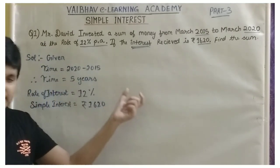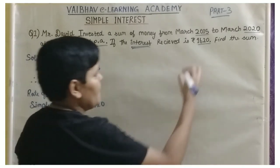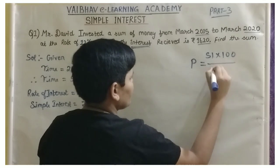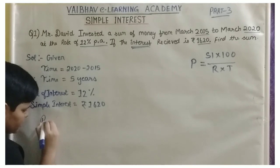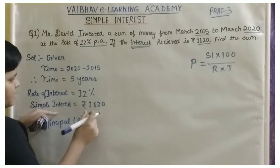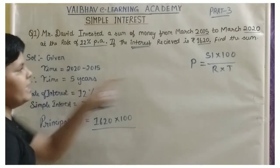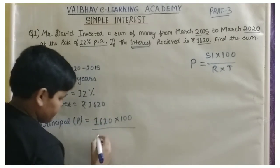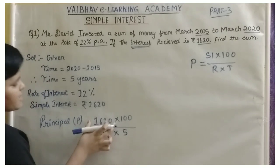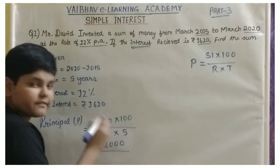Now, as we know our T value (time), R value (rate of interest), and SI value (simple interest), we can substitute the formula: P is equal to SI into 100 by R into T. So, Principal P equals 1,620 into 100, divided by R which is 12% and T which is 5 years, that is by 12 into 5. 1,620 into 100 equals 1,62,000, divided by 12 into 5 which equals 60.